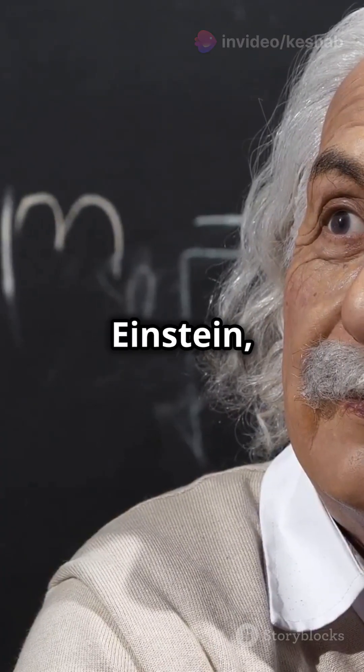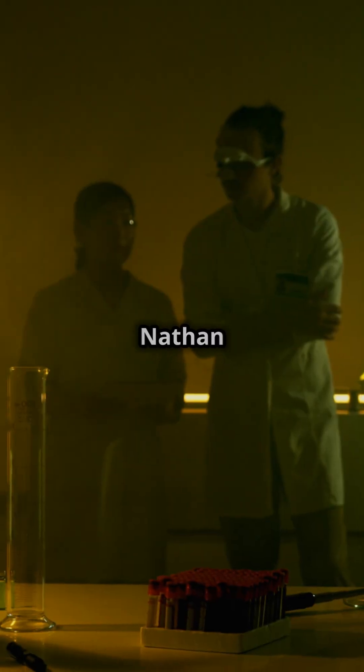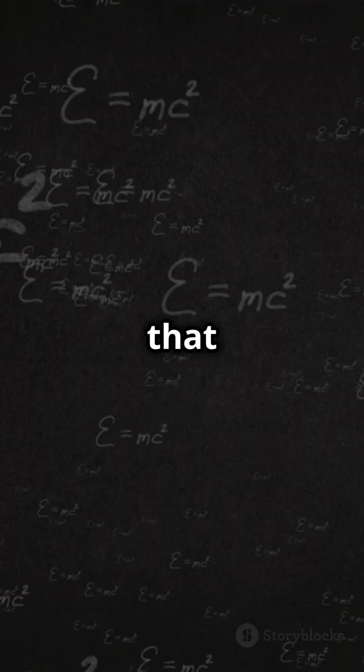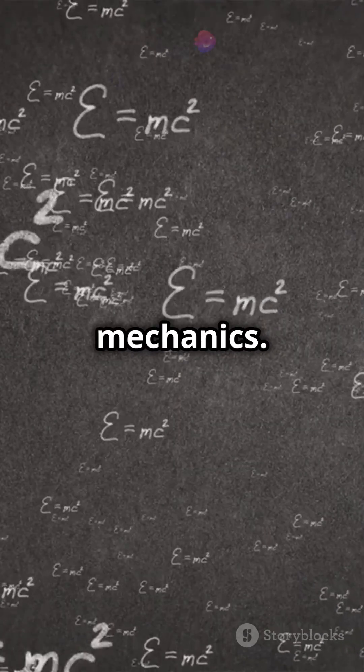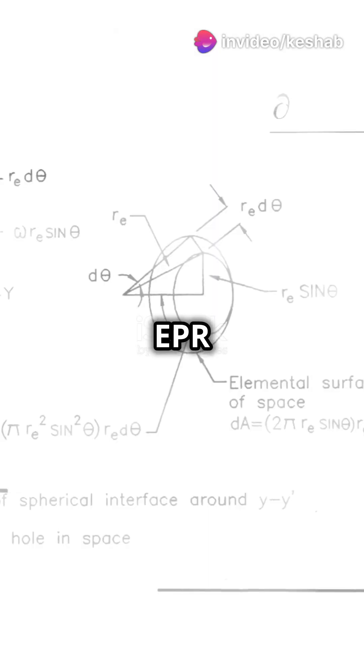In 1935, Albert Einstein, Boris Podolsky and Nathan Rosen posed a question that shook the foundations of quantum mechanics. They introduced the EPR paradox.